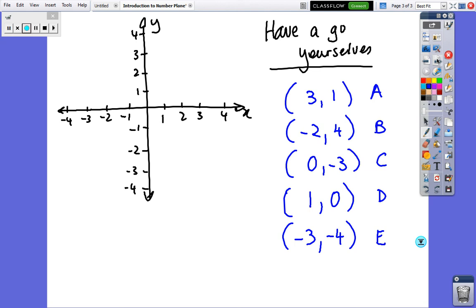So we're looking at, I'll change color just to make a difference. So we've got 3, 1, so that's the point A. Minus 2, 4, so that's the point B.